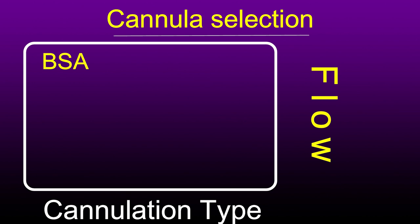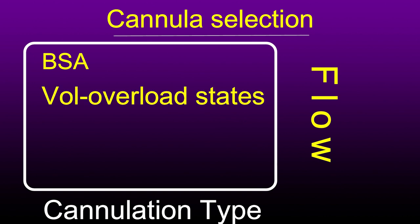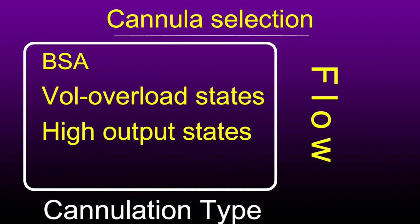Cannula selection depends on the body surface area of the patient, and also on clinical situations such as a volume-overloaded state — meaning more volume in the patient — requiring a bigger venous cannula to drain that extra blood from the heart. High-output states also require a bigger cannula, including in pregnancy where body volume is increased. Central cannulation always gives better venous drainage than peripheral cannulation. If peripheral venous cannulation is used, vacuum assist is always helpful to drain enough venous blood into the circuit.